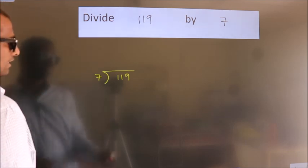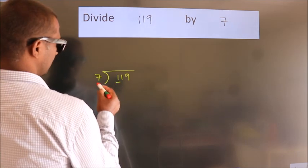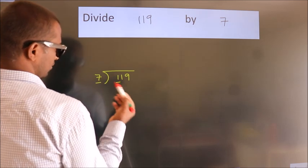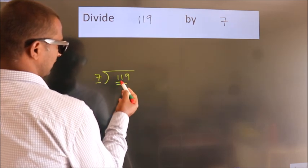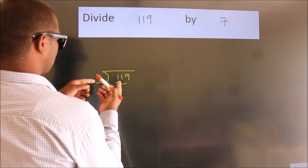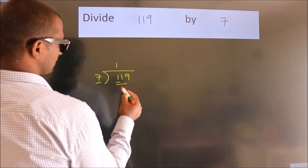Next. Here we have 1, here 7. 1 smaller than 7. So we should take 2 numbers, 11. A number close to 11 in 7 table is 7 once 7.